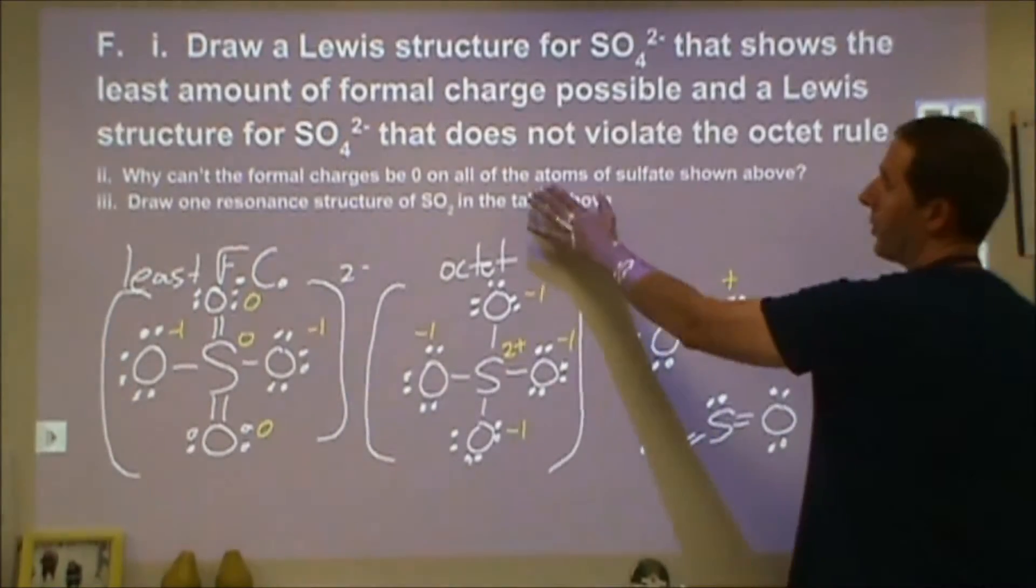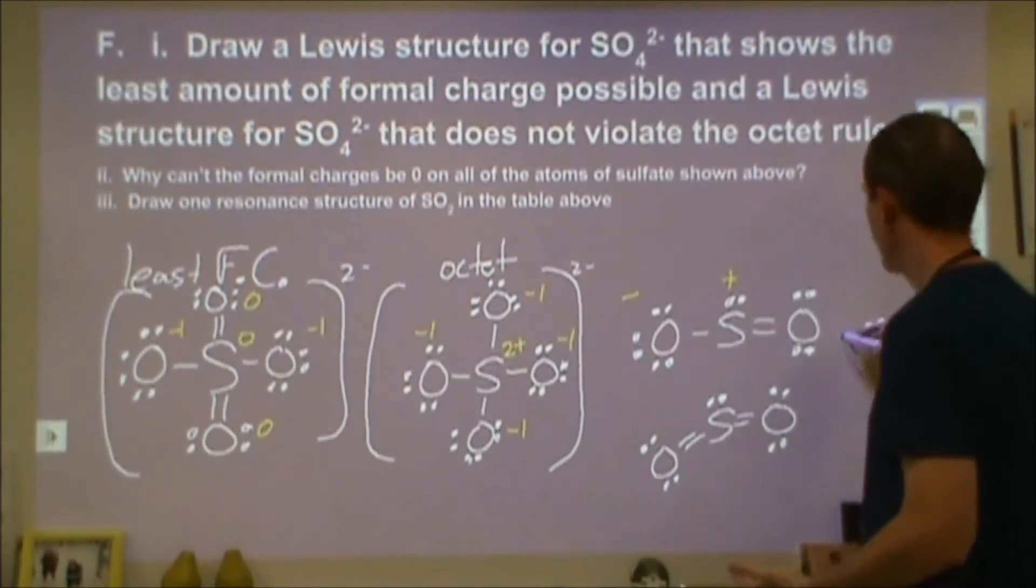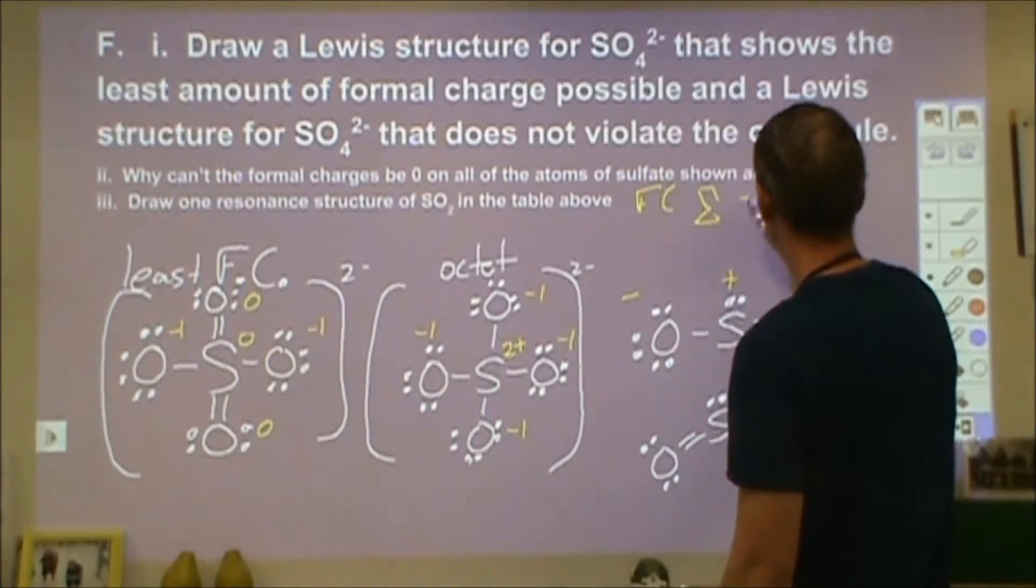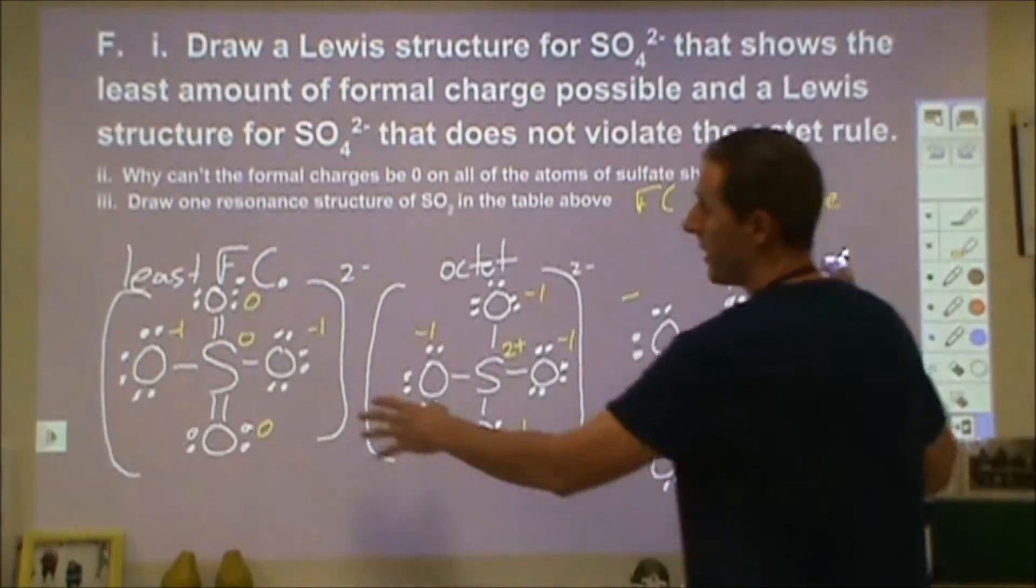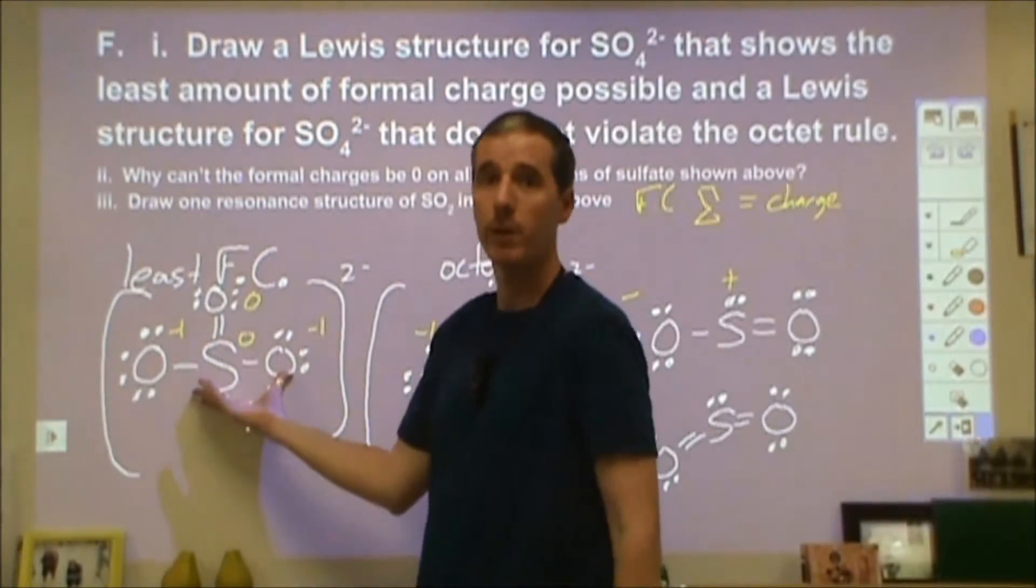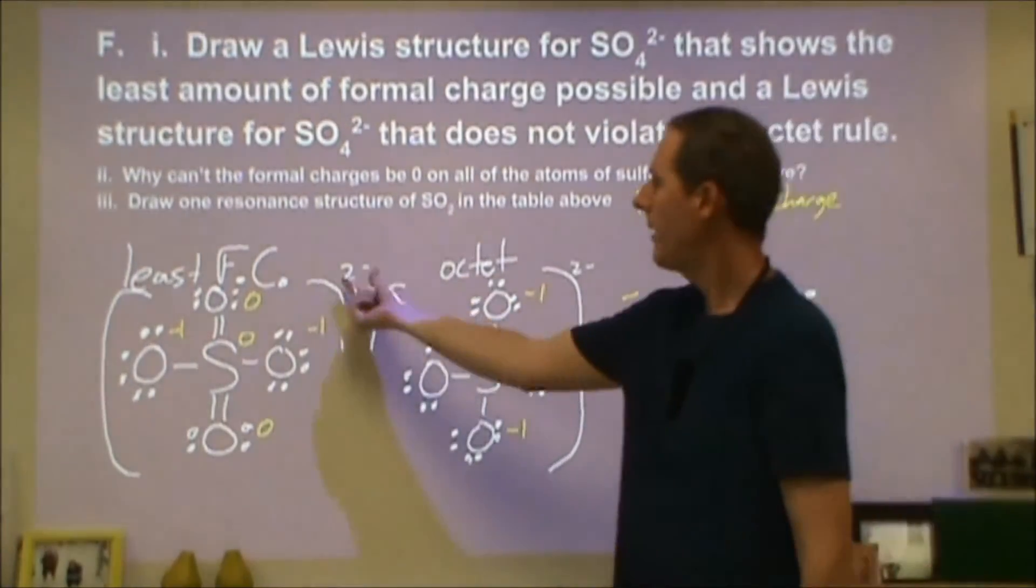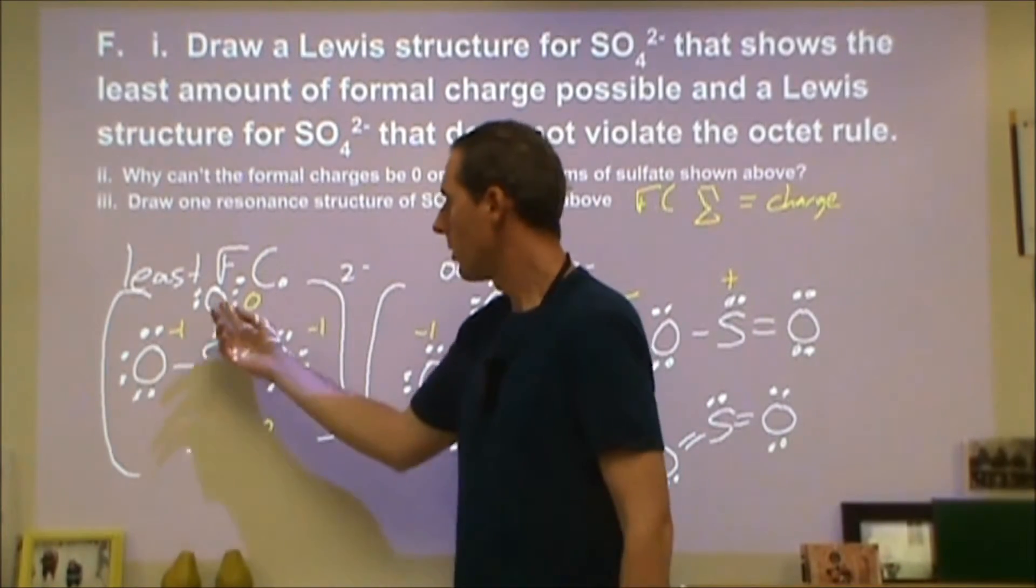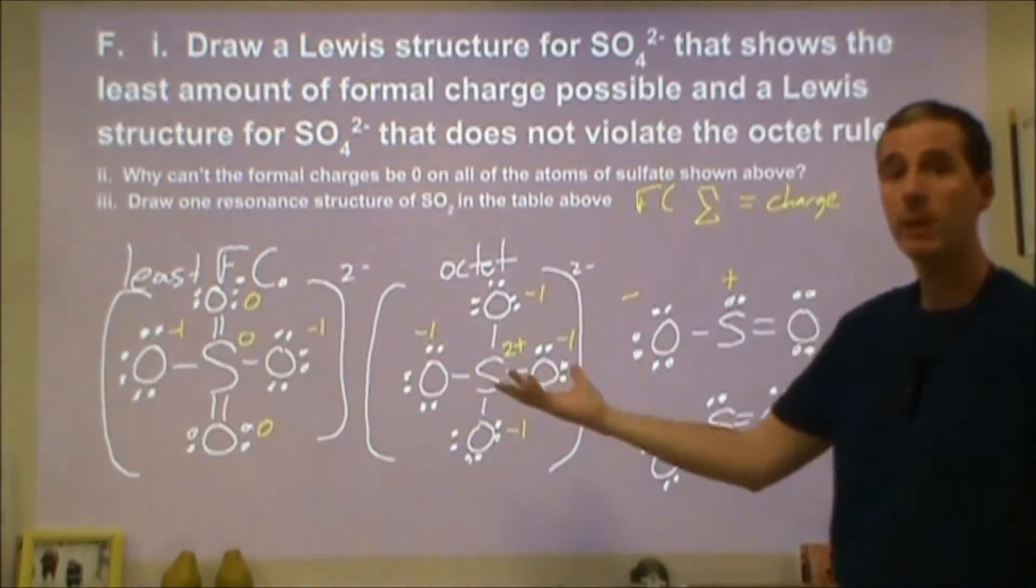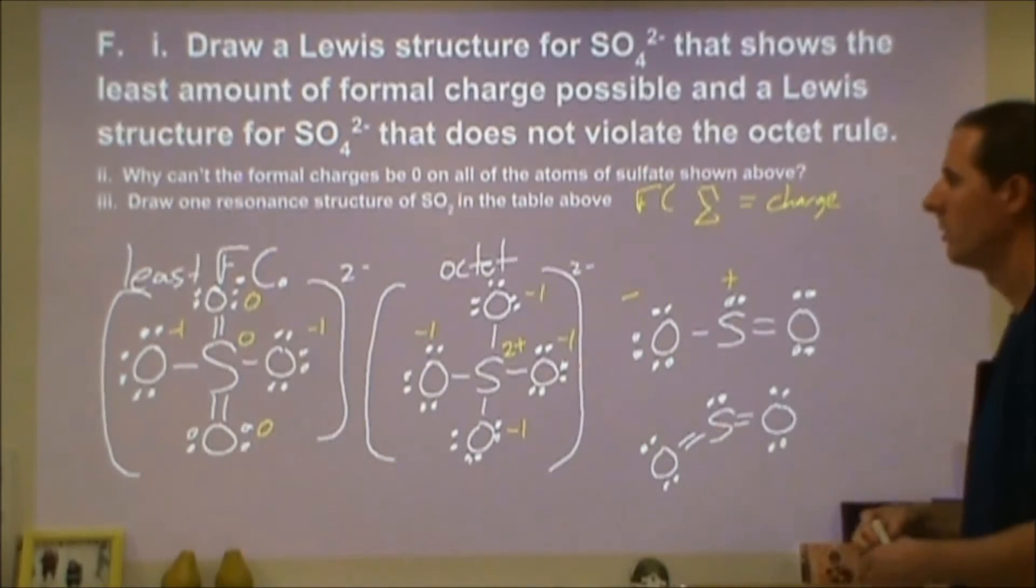Part two says why can't the formal charge be zero on all of the atoms involved in sulfate? The answer is that your formal charge adds up to be the charge. The sum of all your formal charges equals your charge. Since the charge of this is not zero, the formal charge is not going to be able to add up. The actual logistics of that is that there are just too many electrons here. There's no way to distribute all these electrons so there's not a formal charge on any of the atoms by virtue of having two extra electrons compared to the number of protons. We have 32 and 16, so we have 48 protons here and 50 electrons. There's no way for me to distribute those so that something doesn't have more electrons than protons.